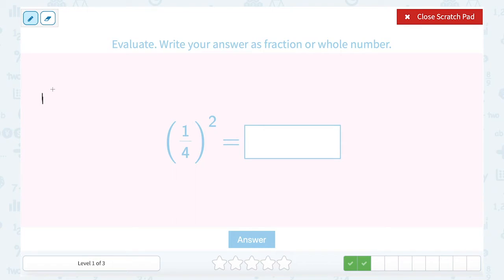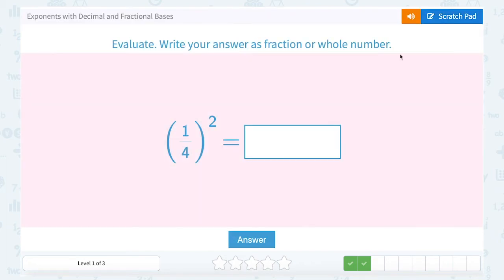So we would write one-fourth raised to the second power as 1 squared over 4 squared. 1 squared is 1, and 4 squared is 16, so that gives us one-sixteenth.